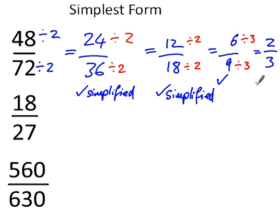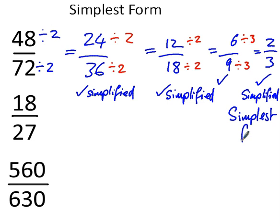Now let's ask ourselves: are there any common factors of 2 and 3? No — apart from 1, which I'm discounting because dividing both numbers by 1 won't change very much. So the fully simplified form — the simplest form — of 48 over 72 is 2 thirds.